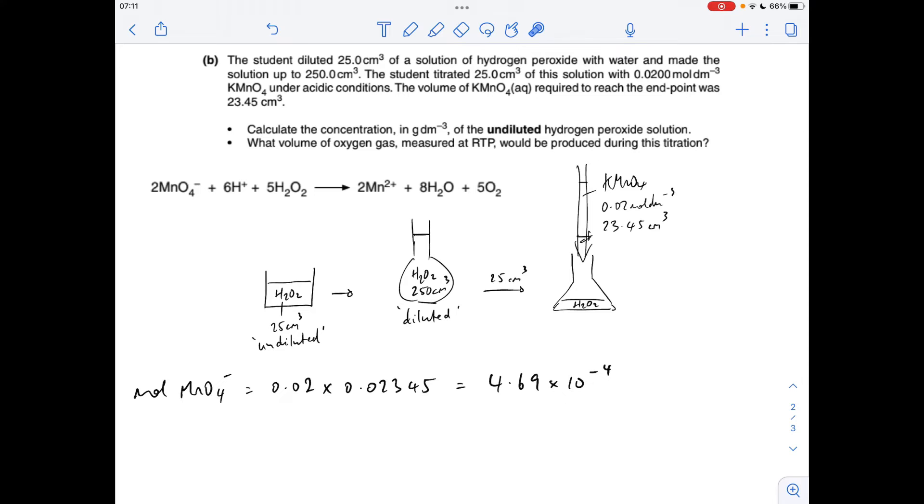Next thing, we'll apply the mole ratio. We know that. We want to know the moles of hydrogen peroxide, so it's 5 over 2 times. That's coming out at 1.1725 times 10 to the minus 3. Obviously they're the moles of hydrogen peroxide in this 25 cm cubed sample.